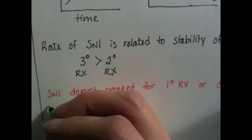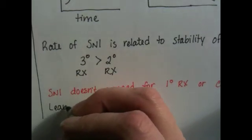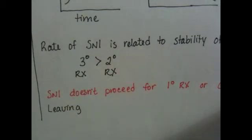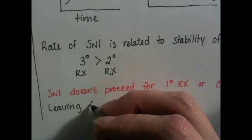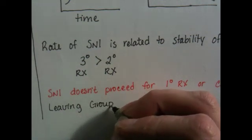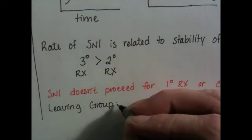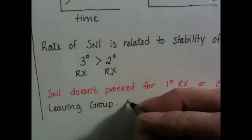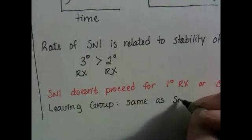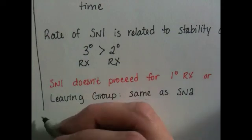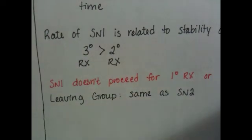The leaving group in SN1 reactions has to follow the same kind of rules as the leaving group for SN2 reactions, meaning it has to be independently stable. You can't kick off a really strong nucleophile, otherwise it's going to come back and try to react with the product of your reaction.